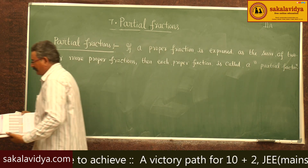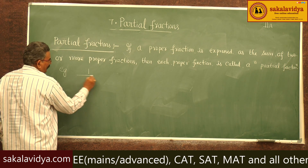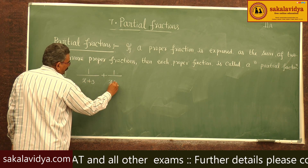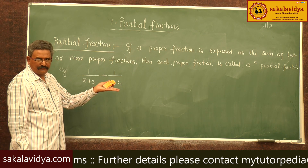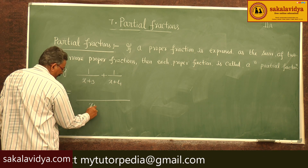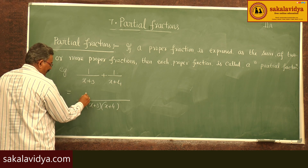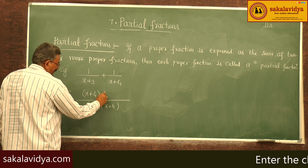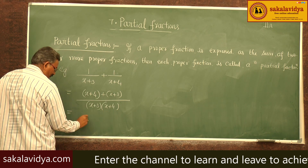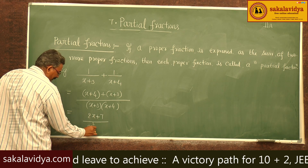Let us take one example. Take 1 by (x plus 3) plus 1 by (x plus 4). Let us add these two. The result is: x plus 4 plus x plus 3, all over (x plus 3)(x plus 4), which gives 2x plus 7 over x squared plus 7x plus 12.